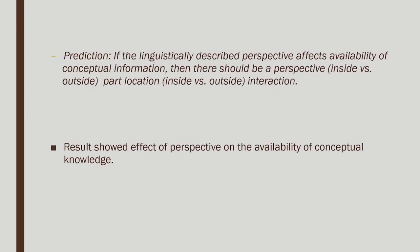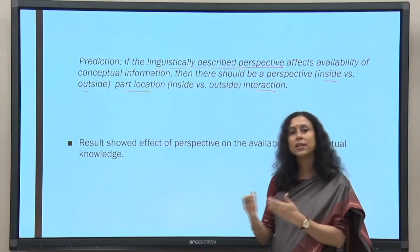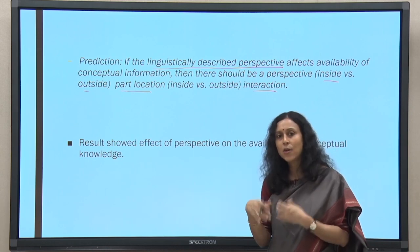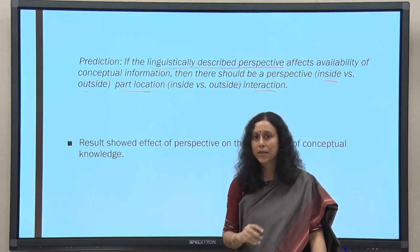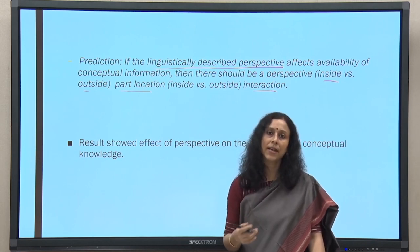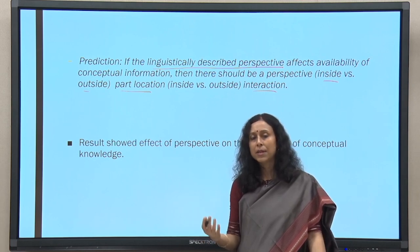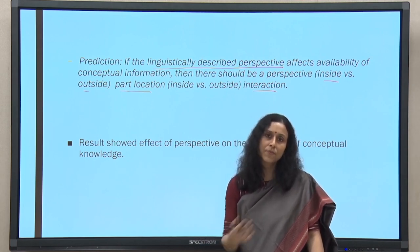The prediction was that if linguistically described perspectives affect the availability of conceptual information, then there should be a perspective — outside versus inside — and part-location interaction. If linguistically the scene is described inside, it should impact how you retrieve information about that object. By putting you inside the restaurant, does it create a closer interaction between the subject and the objects inside the scene? This is what they tried to find out, simply by using sentences in different ways — participants just read a sentence, then saw a word, and said whether the word was part of that object.